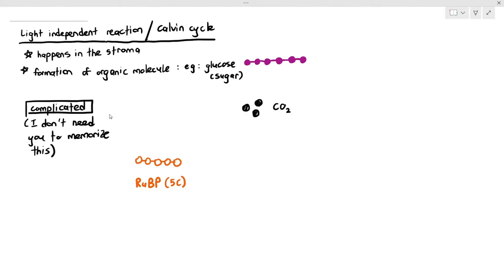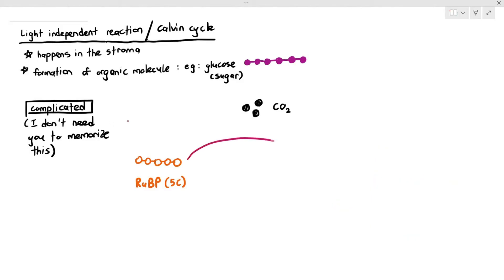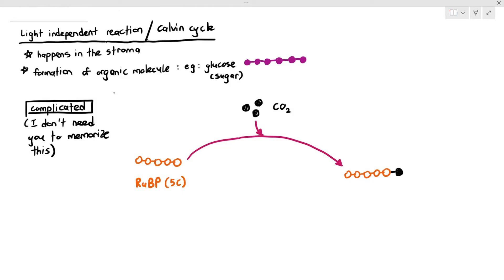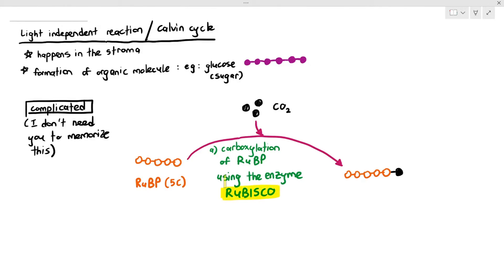Because carbon dioxide molecules cannot be joined directly, plants take one carbon dioxide and join it to one RuBP — a process known as the carboxylation of RuBP. Carboxylation means adding a carbon dioxide molecule. This process uses an enzyme called Rubisco, whose full name is ribulose bisphosphate carboxylase. Rubisco is one of the most common enzymes in the world because every photosynthetic organism has it.